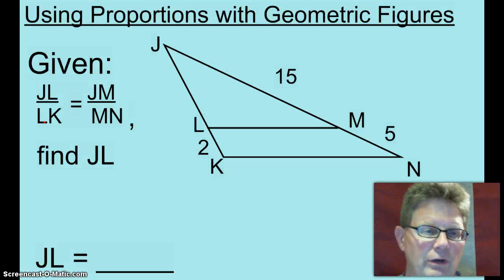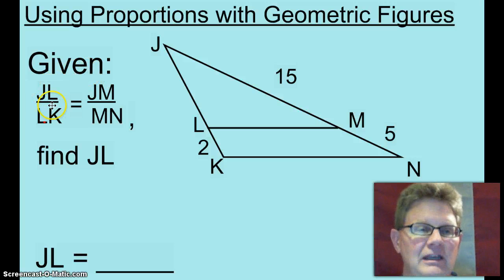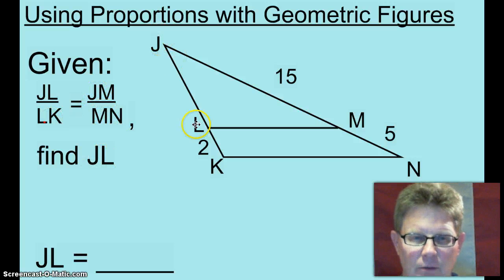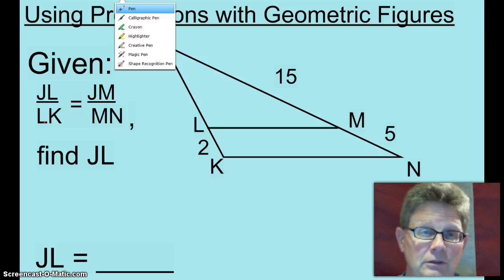Right now, since we don't know anything about similarity, we haven't gotten there yet. You're going to be given a proportion like JL over LK equals JM over MN and you're going to be asked to find how big JL is. With this, it's really simple. All you're going to do is substitute in numbers as you need to into that proportion.